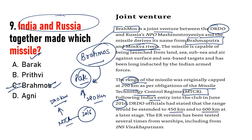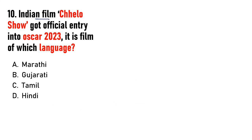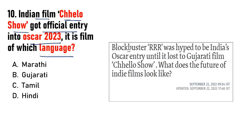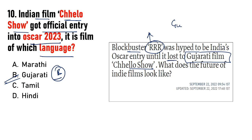India ki film 'Chhello Show' Oscar 2023 ke liye official entry mili hai. Yeh film kis bhaasha mein hai — Marathi, Gujarati, Tamil, ya Hindi? Aap dekh sakte hain ki blockbuster RRR movie ko Oscar entry maana ja raha tha, lekin usne lose kiya Gujarati film Chhello Show se. Answer hoga B — Gujarati. Yeh movie abhi bhi trending mein hai aur Gujarati film ka Oscar entry hona ek bahut important question hai.